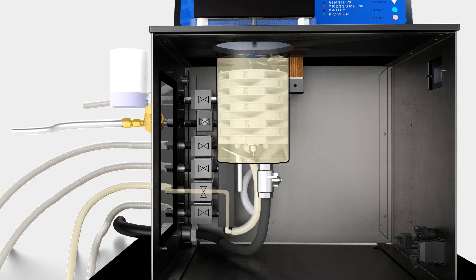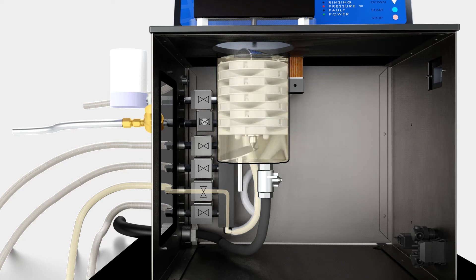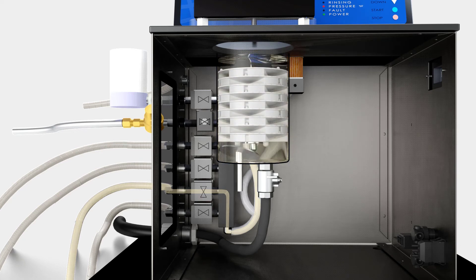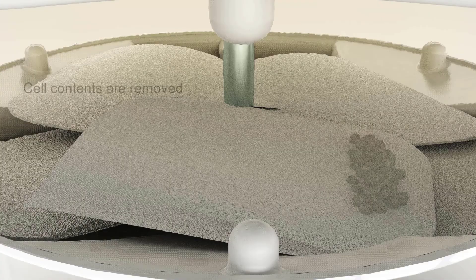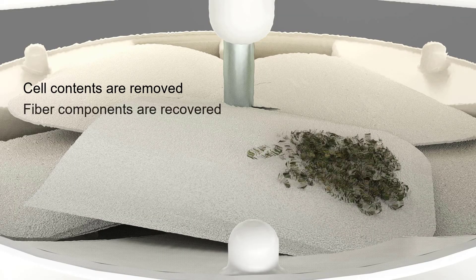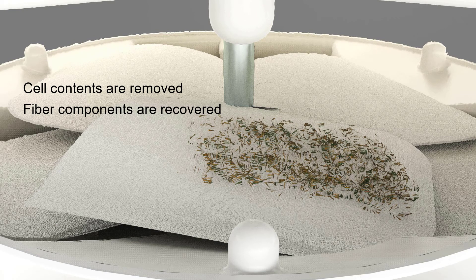During the run sequence of chemical additions and rinses, the non-fiber components solubilize and the samples are filtered. Cell contents are removed while recovering the fiber components to be measured.